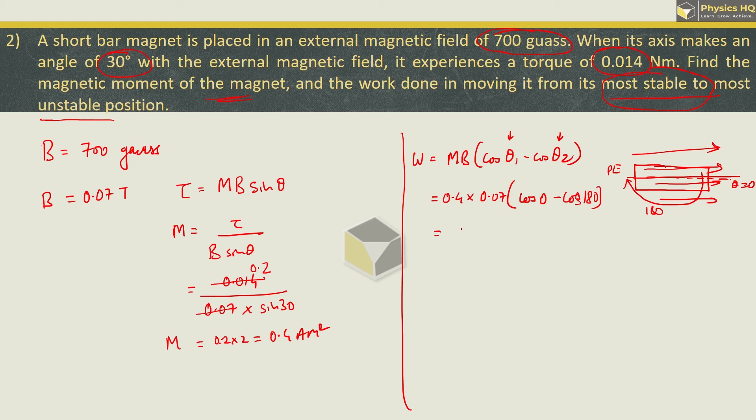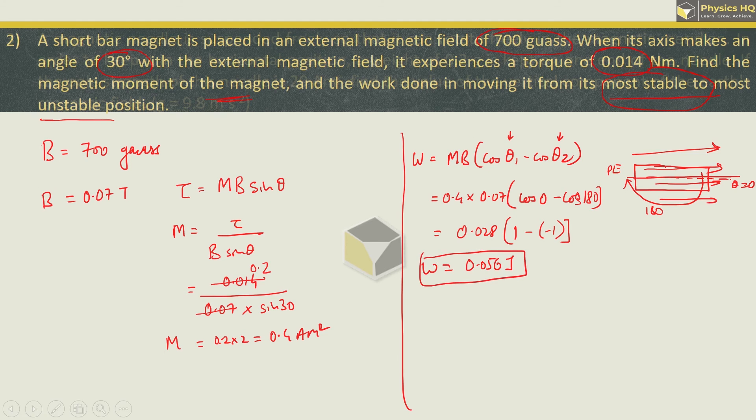It will be 0.028. Cos of 0 is 1 and cos of 180 is minus 1. So, it will be 1 minus of minus 1, which is plus 1, equals 2. So, 2 into 0.028 will give us 0.056 Joule. This is the work done in this case. Let us check out the next sum.